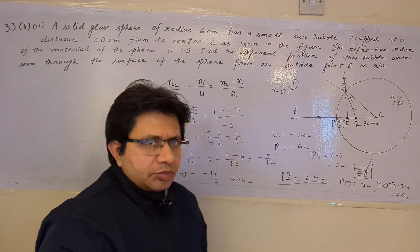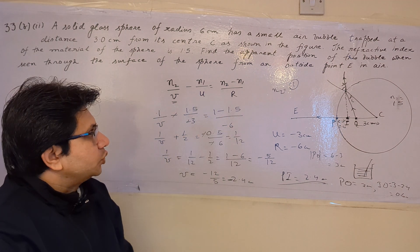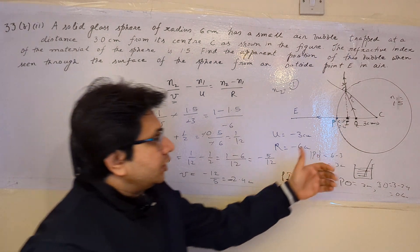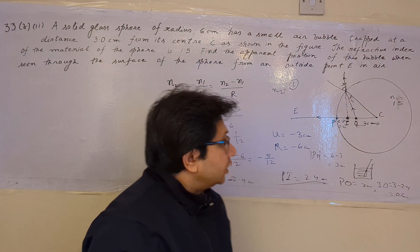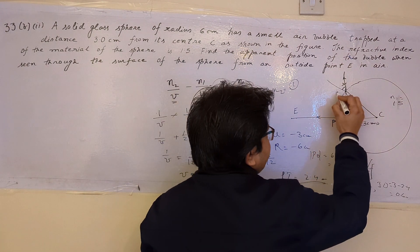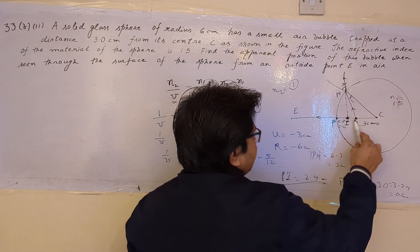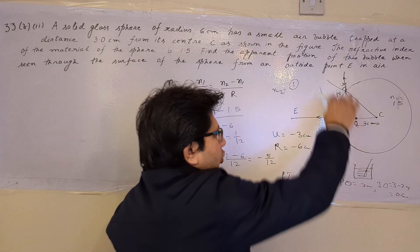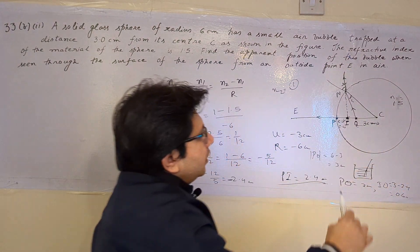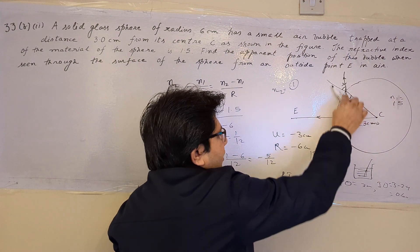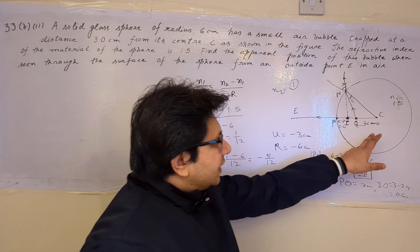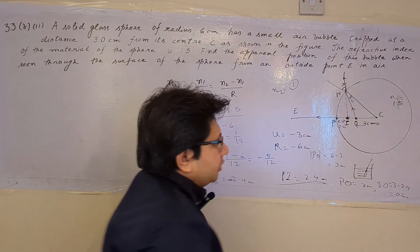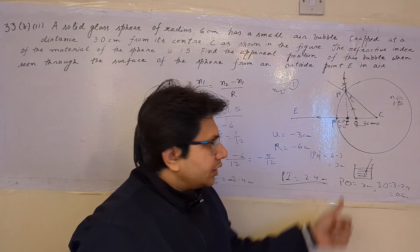To summarize, this problem is solved using the formula N2/V minus N1/U equals (N2 minus N1)/R. To find the direction of the refracted ray: since the ray travels from a denser medium to a rarer medium, it bends away from the normal. When we trace back the path, we find the apparent position of the object. We then calculate the image position with respect to the pole.